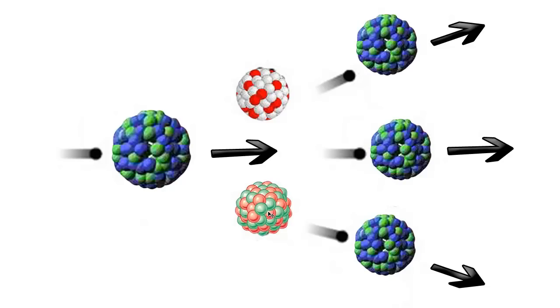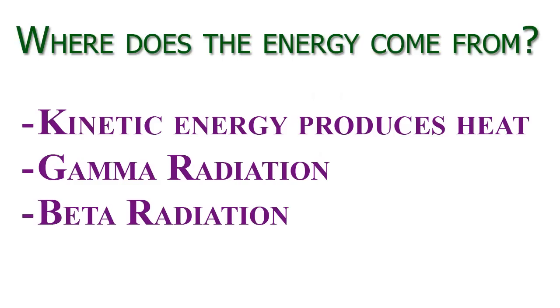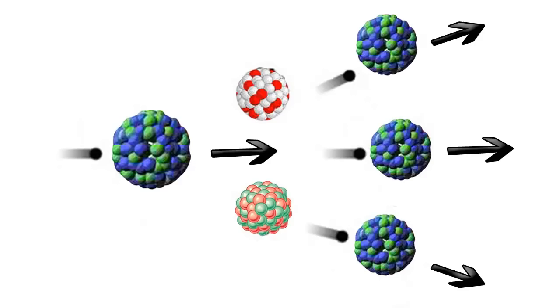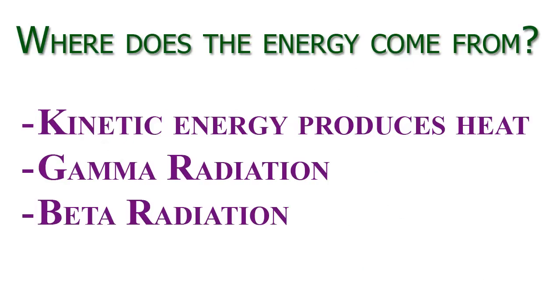The new elements may also emit beta radiation or gamma radiation. So basically you are guaranteed to have at least gamma radiation and also kinetic energy and therefore heat. And aside from that you also may have beta radiation and gamma radiation coming from these new elements. So with all of that that is how it produces energy in nuclear fission.